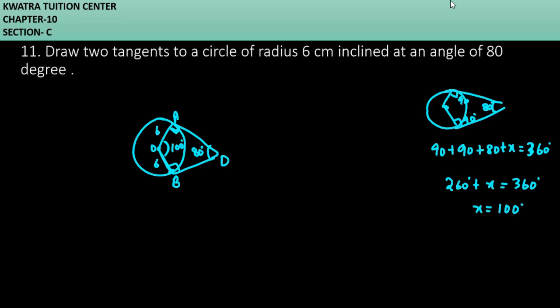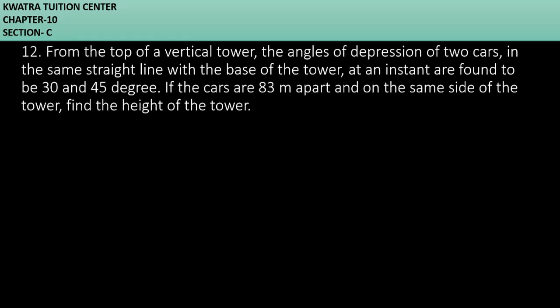We'll start with the next question, question number 12. It says from the top of a vertical tower, the angles of depression of two cars in the same straight line with the base of the tower at an instant are found to be 30 and 45 degrees. Let's try to create our diagram here. We have a vertical tower and angles of depression that are 30 degrees and 45 degrees respectively. With the help of the horizontal line, your angle will be 30 degrees, then 45. This is 30 by alternate interior angle, and this one is 45 degrees.